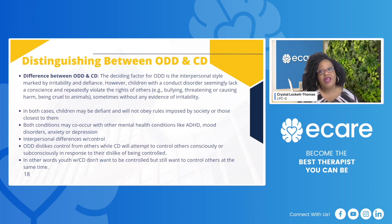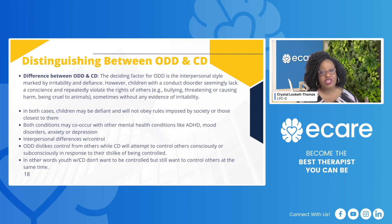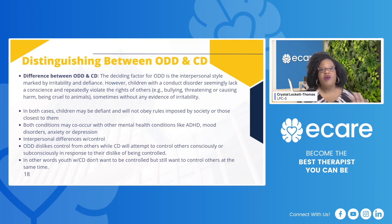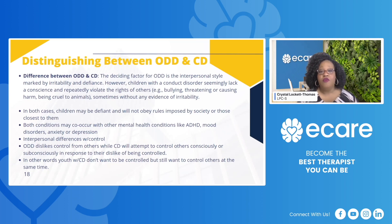That interpersonal style can be a great indicator as to whether we have ODD or conduct disorder, especially if some of those symptoms are overlapping or we may not have enough information and need to make a diagnosis or put a placeholder there. In both cases, children are going to be defiant — they will not obey the rules imposed by society or those closest to them at home or school.